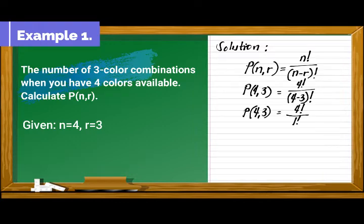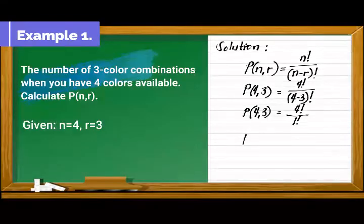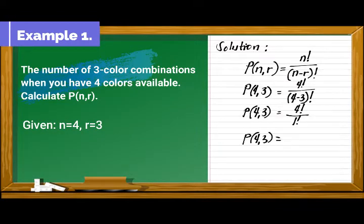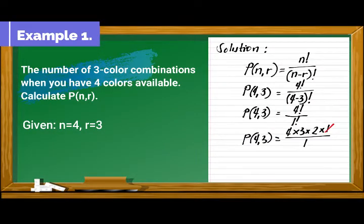And then, next, let's simplify 4 factorial divided by 1 factorial. Divide out 1. And our final answer would be 4 times 3 times 2 which is equivalent to 24.